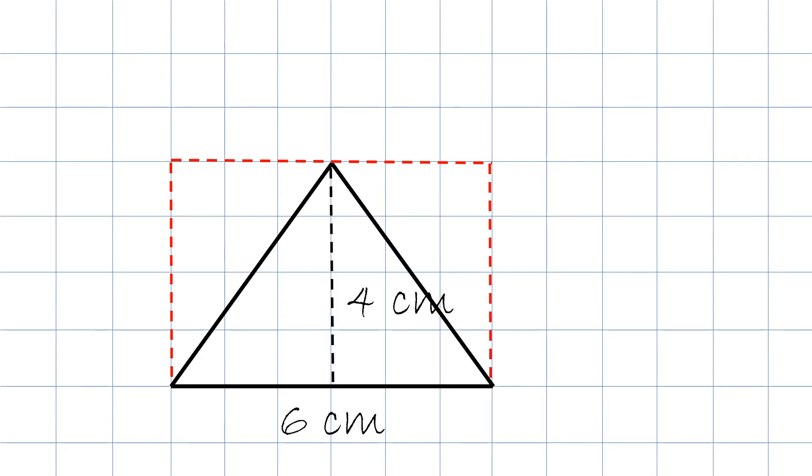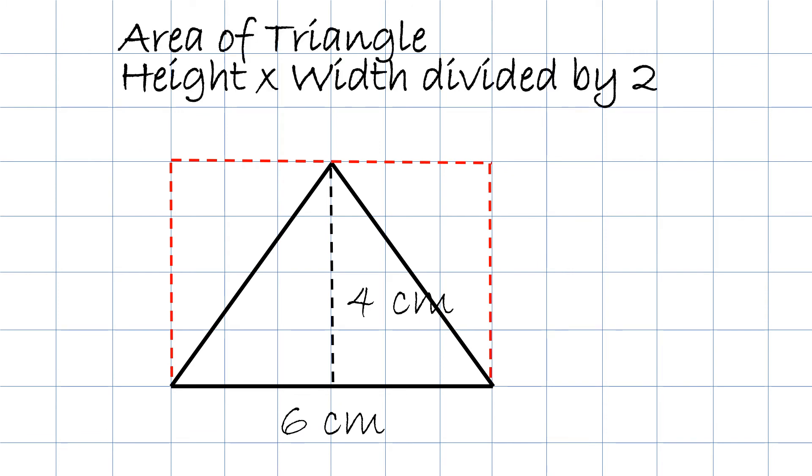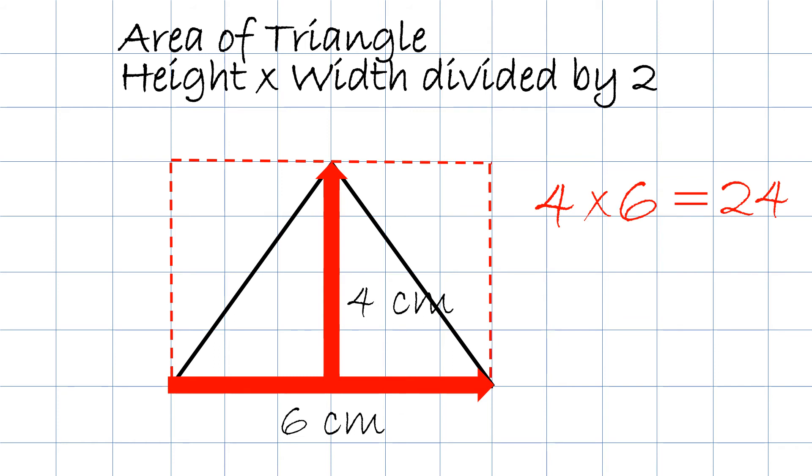So then we just take height times width divided by 2. So we know the height is 4 and the length is 6. So 4 times 6 equals 24. We then take 24 divided by 2, which will equal 12 centimeters squared.